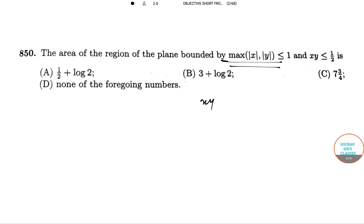so xy is any bound, xy equal to a constant, this is called a rectangular hyperbola.